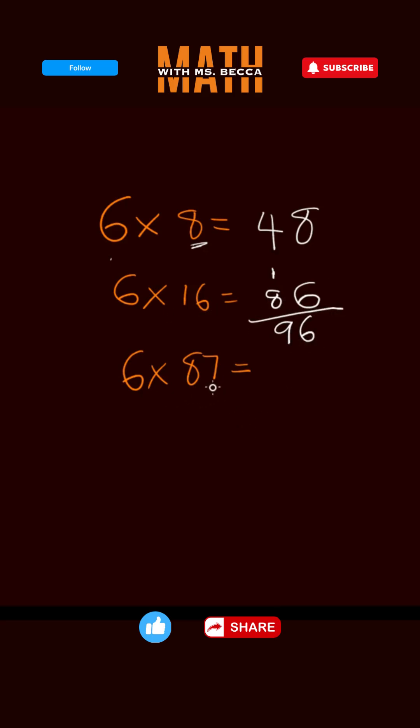Now to multiply an odd number, just use either 86 or 88. If you use 86, when you get your answer, you add 6 to it. If you use 88, you subtract 6 from it.